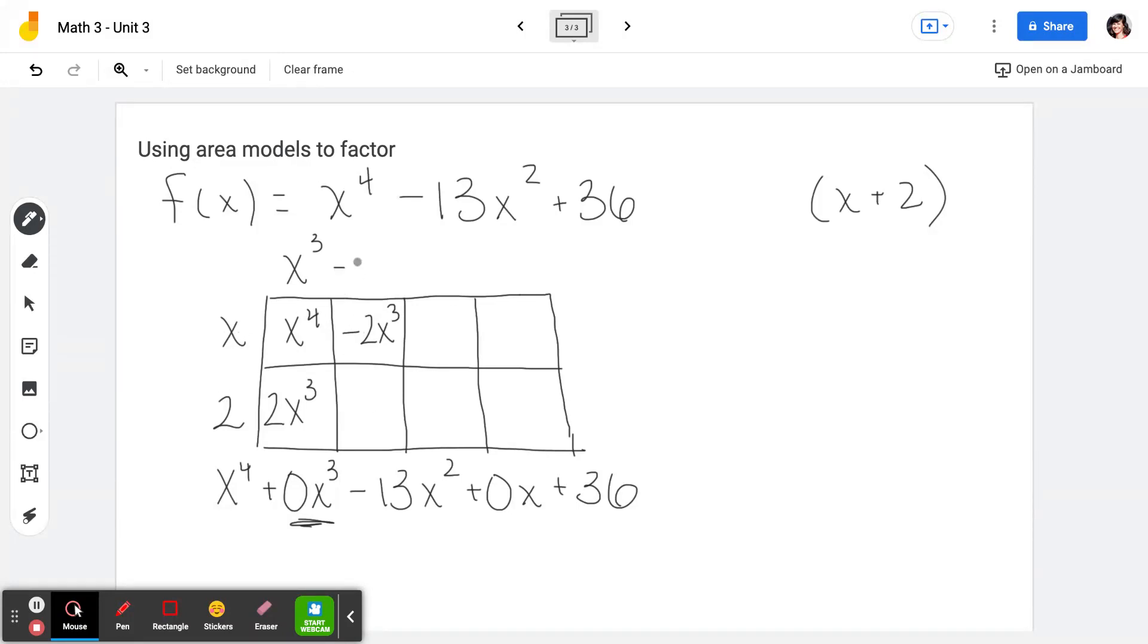x times negative 2x squared is what gives us negative 2x cubed. Continuing our process, we would multiply here, get negative 4x squared. Now we need to add up to this negative 13x squared term.